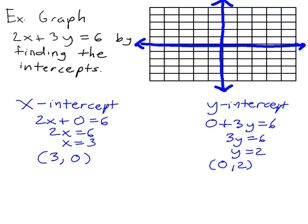So those are our x and y intercepts. So we would plot those 2 points. So our x-intercept is the point (3, 0). Our y-intercept is the point (0, 2).